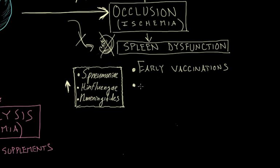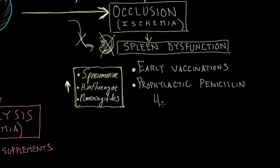In addition to vaccinations — which is prophylaxis — some patients require prophylactic antibiotics, specifically penicillin. This is usually started at four months of age and given up until a child is about six years old.